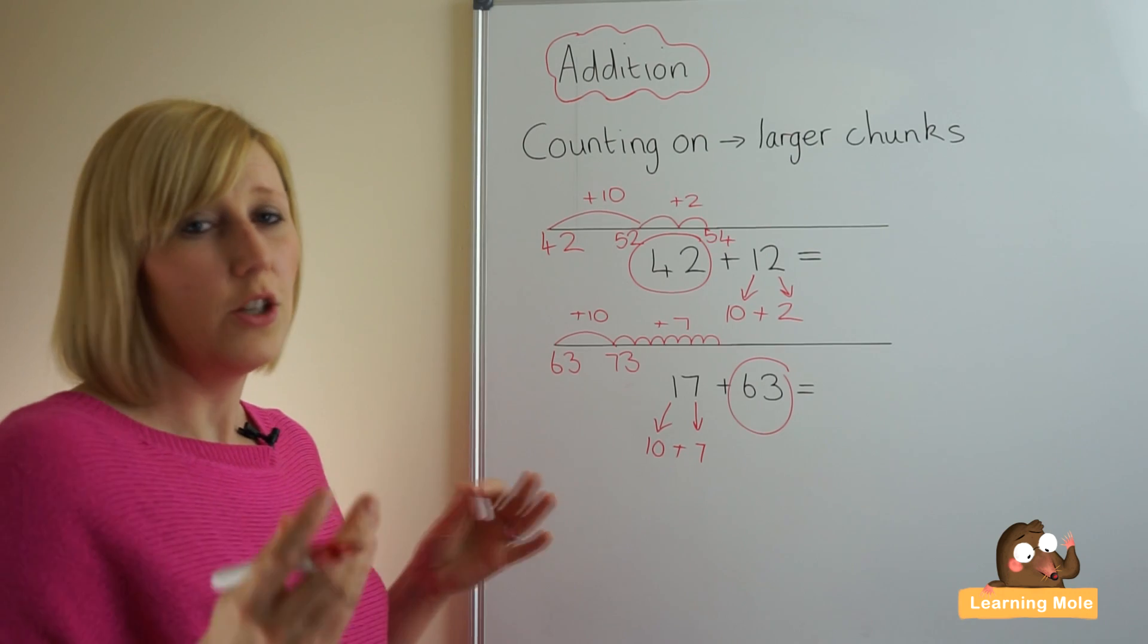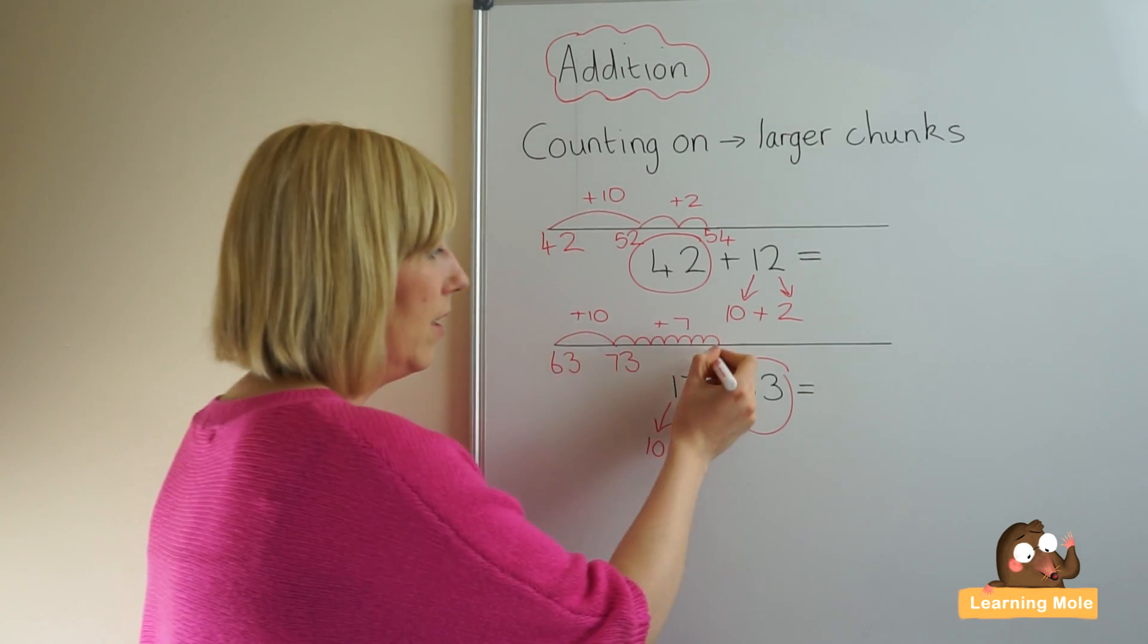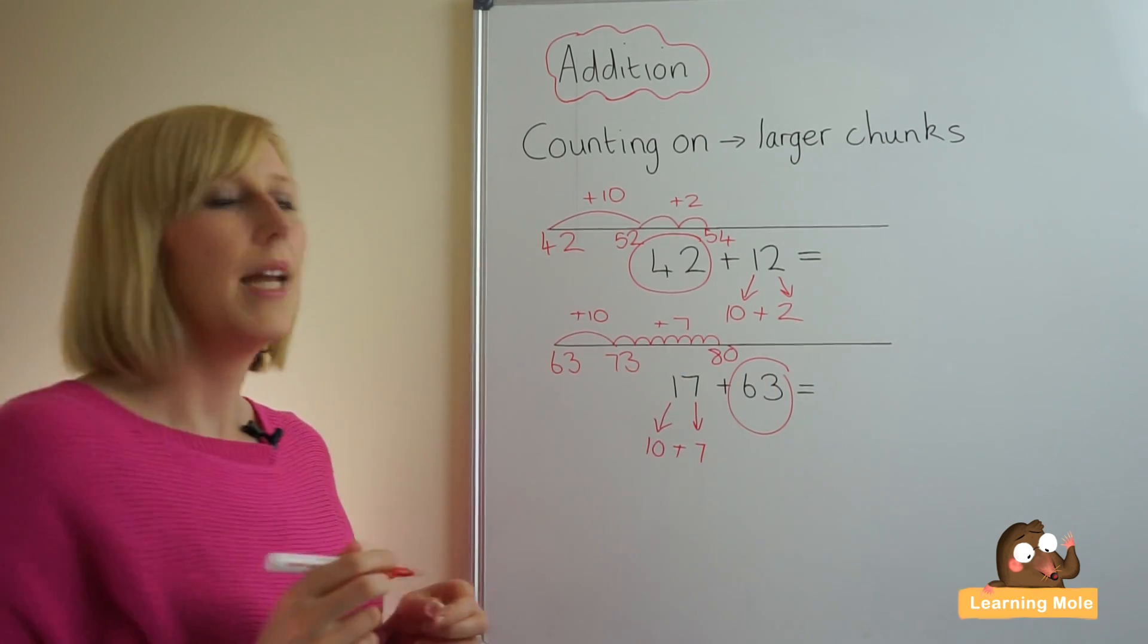And this again, using our known facts, we should already know that seven plus three makes ten, so we are at 80.